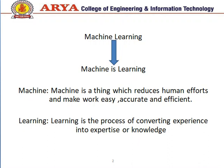Learning in terms of machine learning can be understood on the basis of Bates Shyness theory, in which rats learn to avoid poisonous bait. In the real world, we are surrounded by humans who can learn everything from their experiences. Computers and machines work on our instructions, but can a machine also learn from experiences or past data like a human does? This is the role of machine learning.